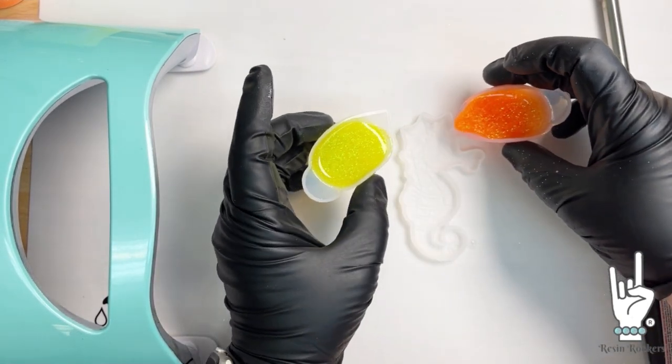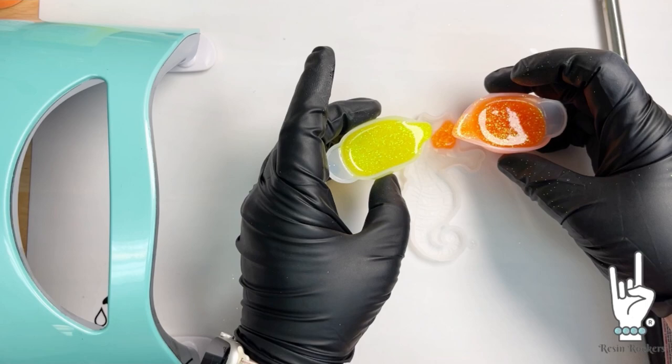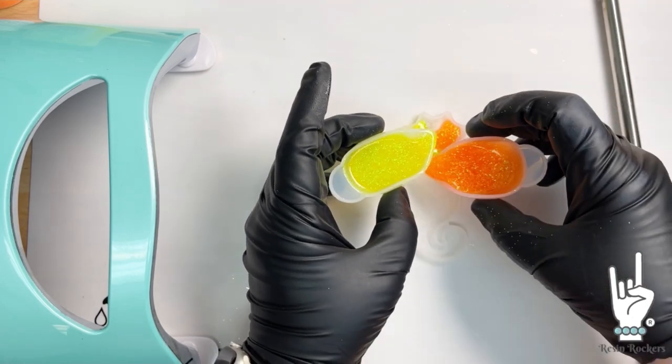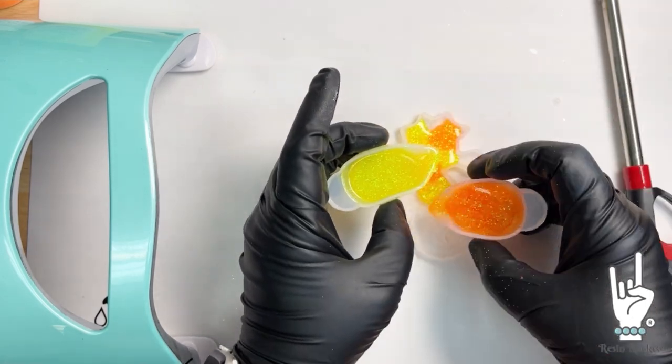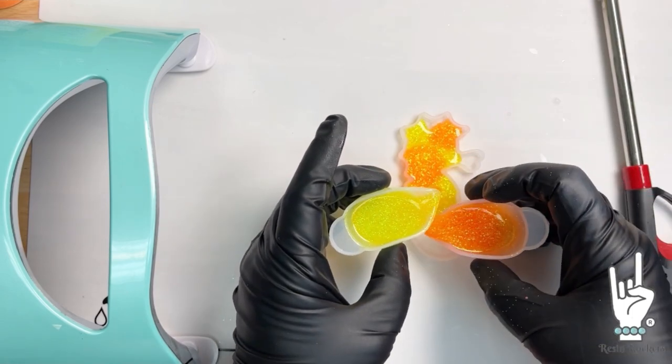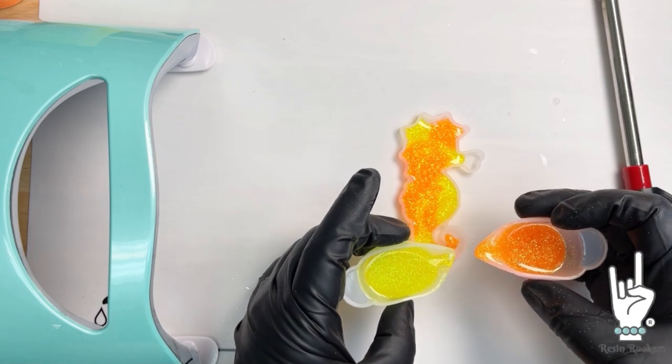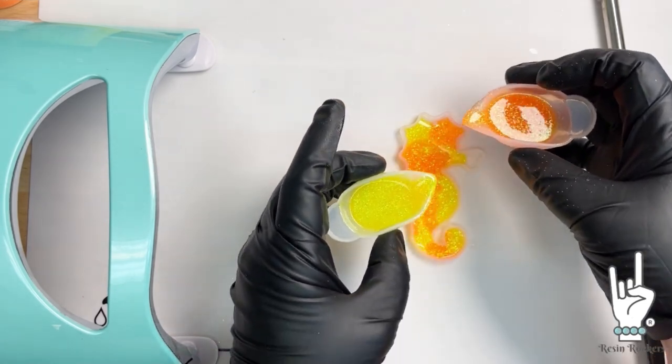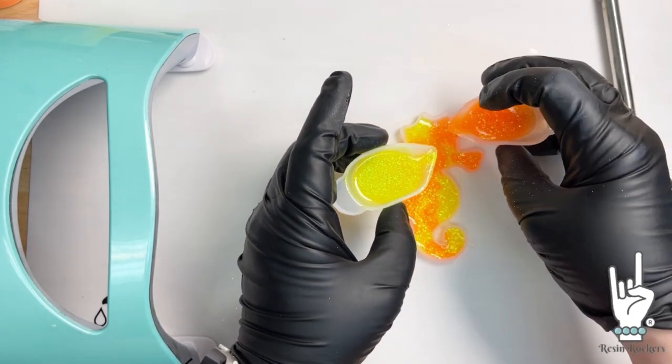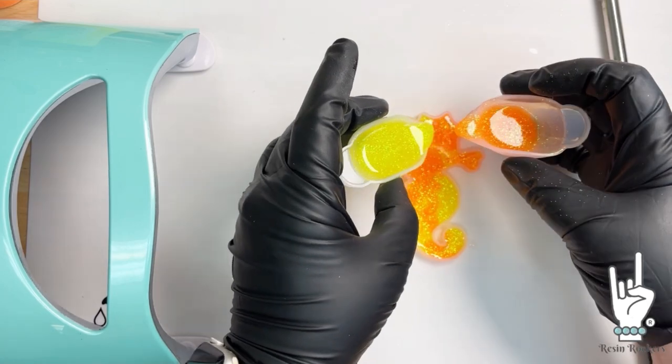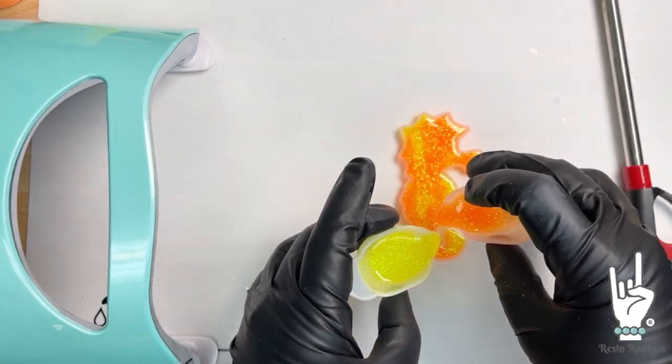Now we're going to go ahead and do kind of a dirty pour. We're going to do a little bit of each color all the way down the mold until we have it nice and filled in. Now remember what shows on the front is whatever touches that mold. So just think it through and lay it how you would want it to look when you demold it.